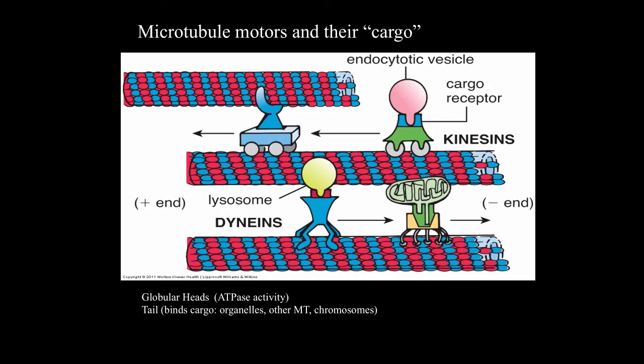The cargo transported by microtubular motor proteins can include organelles such as endocytic vesicles, lysosomes, and mitochondria. The cargo could also be other microtubules or even chromosomes.